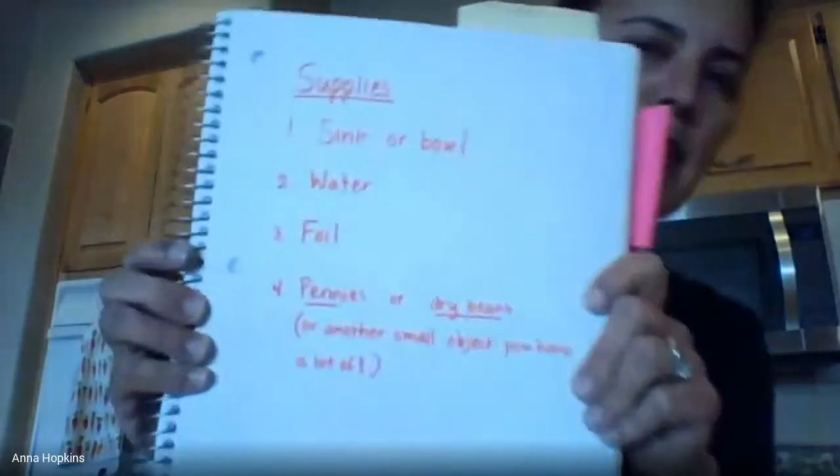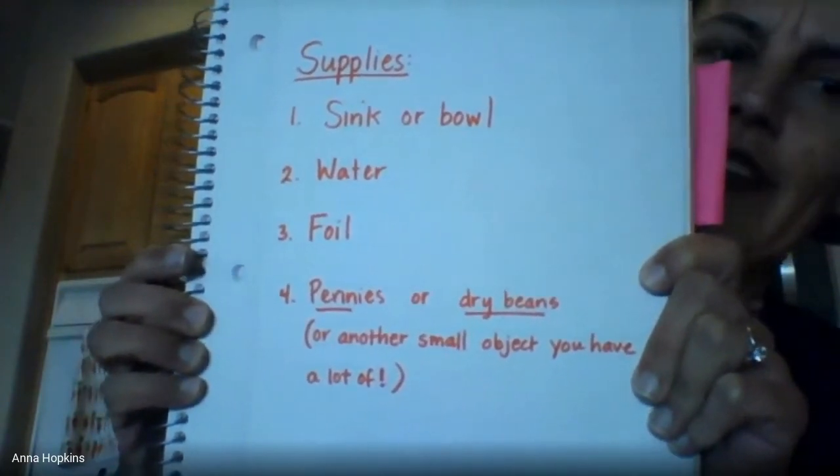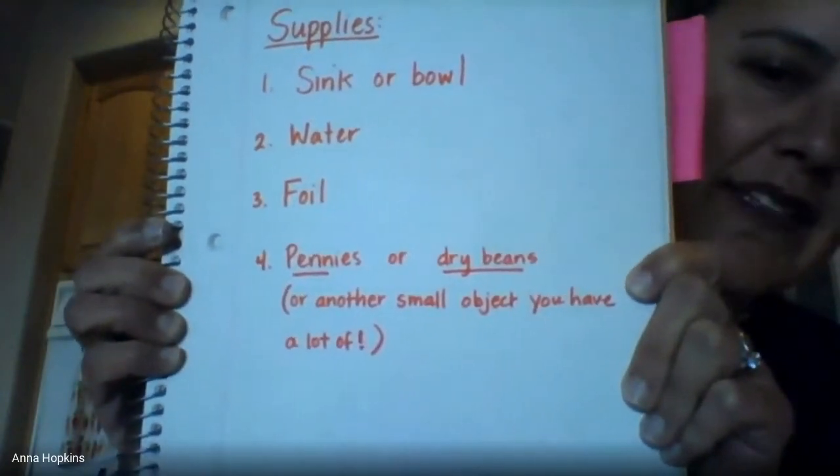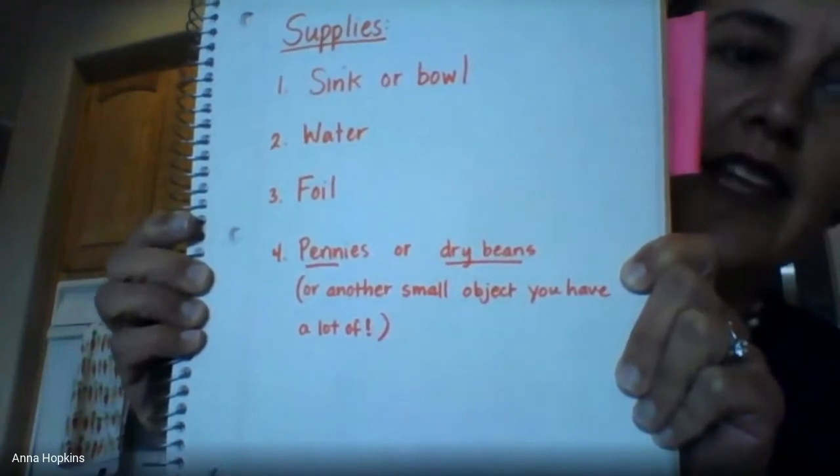So now you've tried the first challenge about floating and sinking. This second challenge is about buoyancy, which is related to the amount of surface area an object has that displaces water. If more water is displaced, there'll be more buoyancy pushing up against it. For this experiment you still need your sink or bowl, water, foil, and pennies or dry beans — some small object you can have a handful of that are okay to get wet.